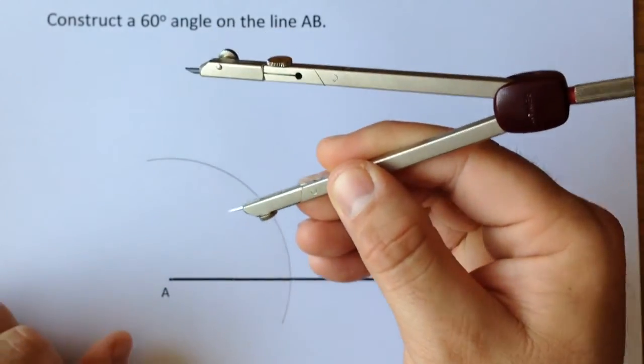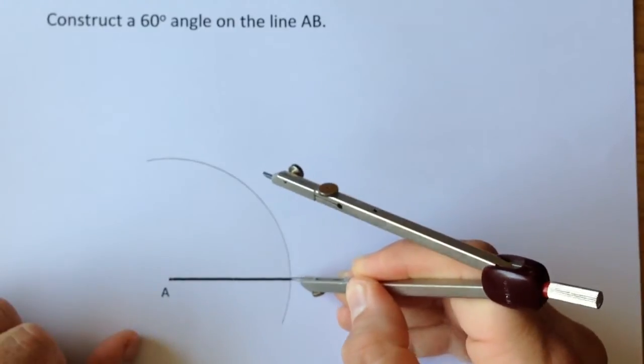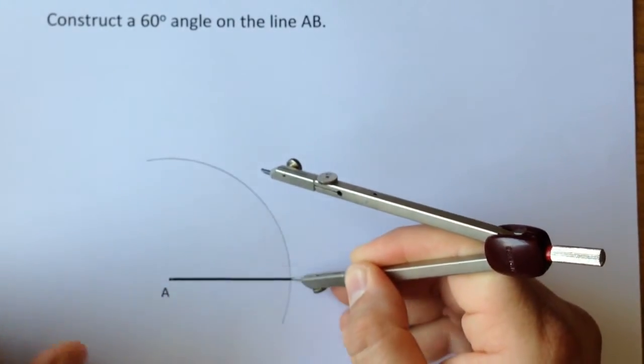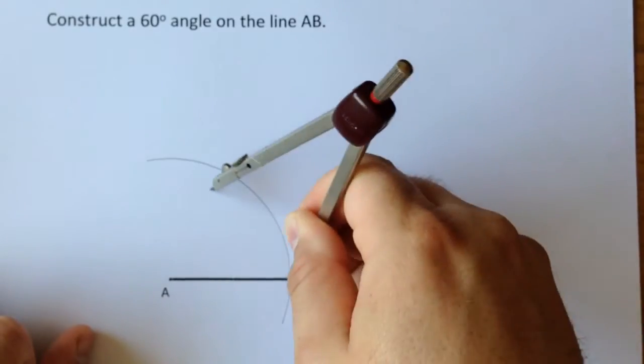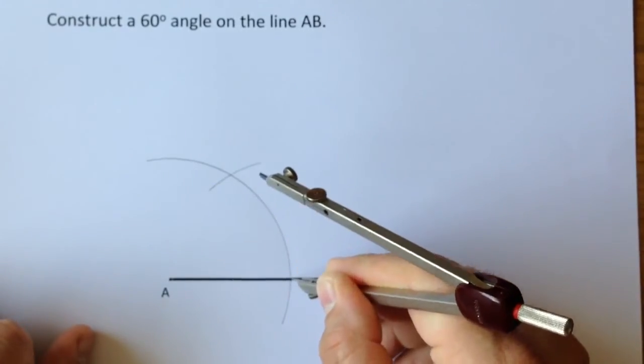Without altering your compass, move the sharp point to where the arc that you've just drawn crosses the line AB, and draw a smaller arc just there to cross your original line.